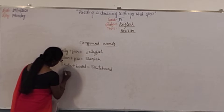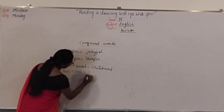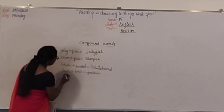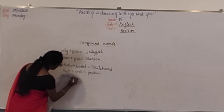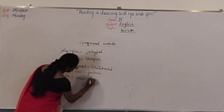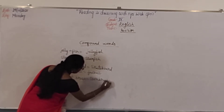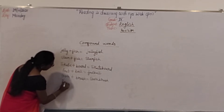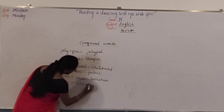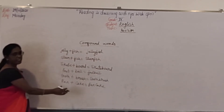Football. Foot plus ball makes football. Tooth plus brush makes toothbrush. Very good. Pan plus cake makes pancake. Very good. These are the compound words.